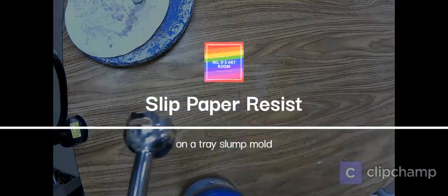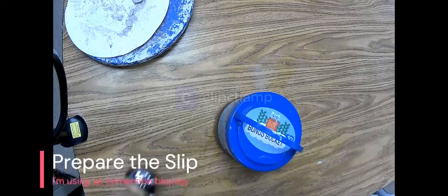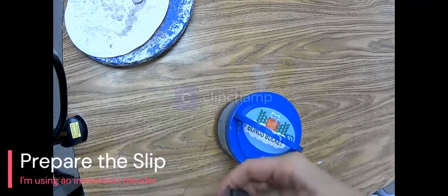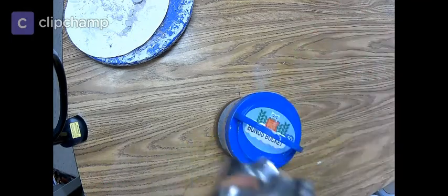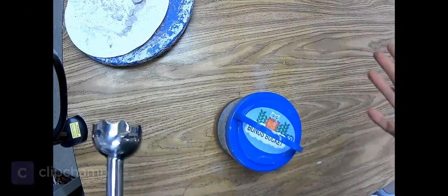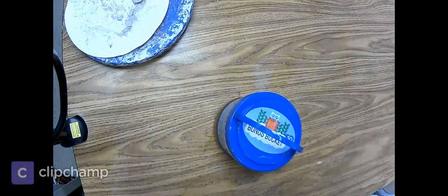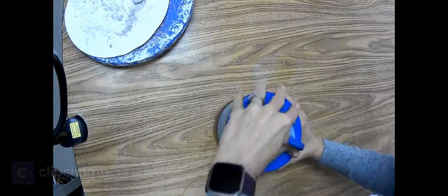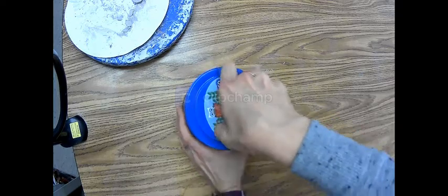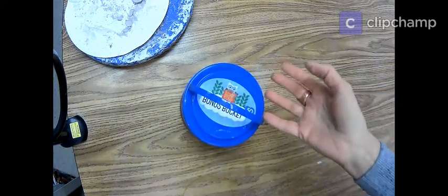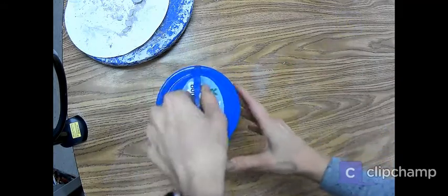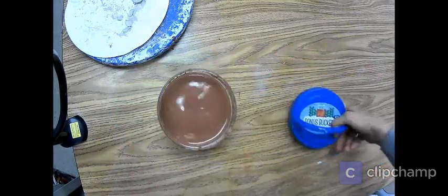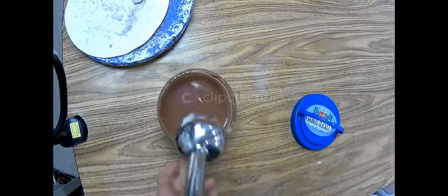Alright, so the first thing I'm going to do is prepare my slip. One of the tips is to use an immersion blender if you don't have any fancy tools. I have this old one from my house that I bought, and I have some clay that I left in water before I went home. It's been out here for like a week because of the winter weather, so I'm just going to see how this goes, trying to mix it up with my immersion blender.